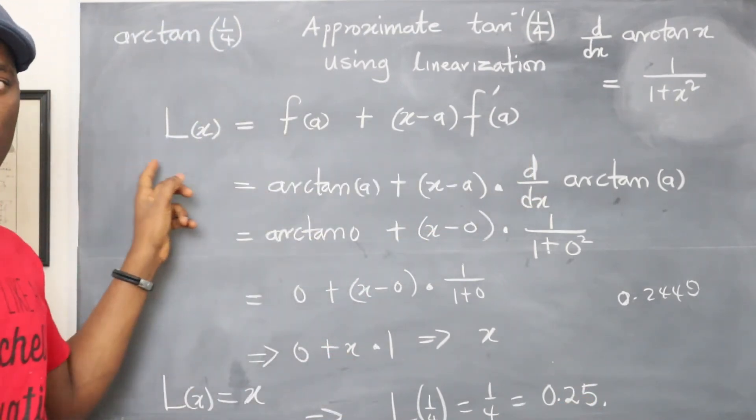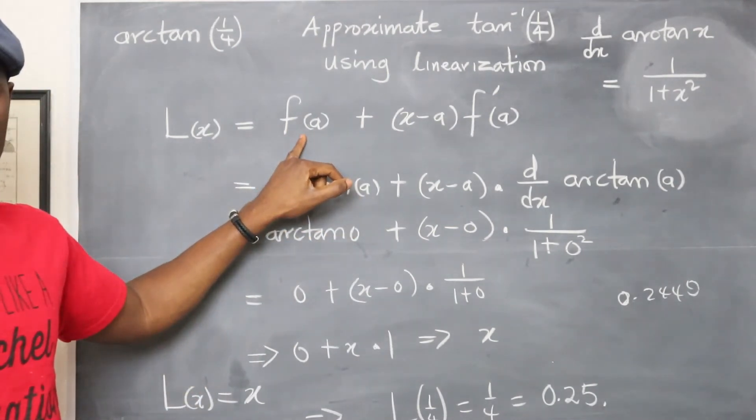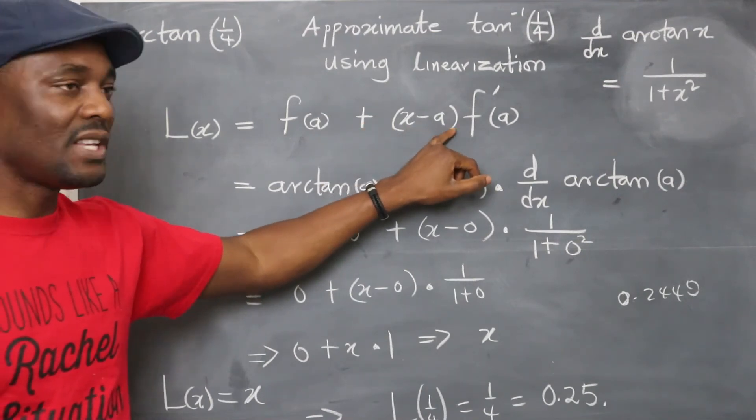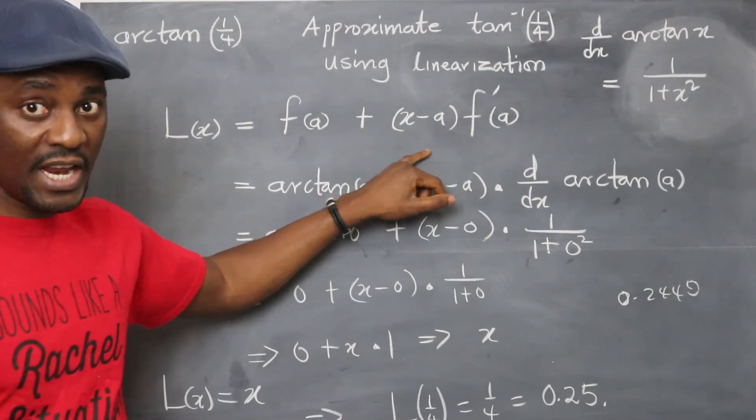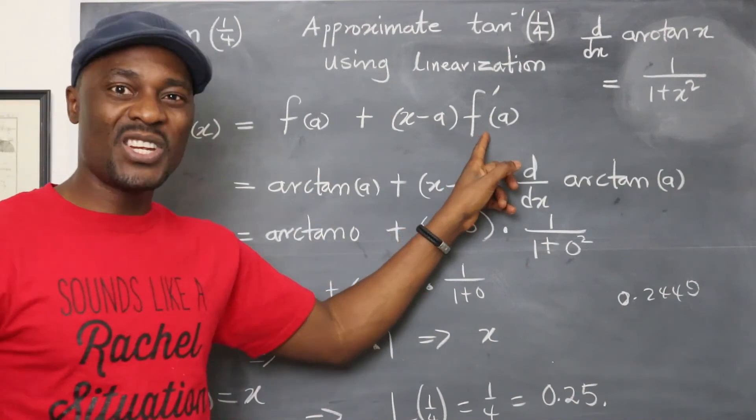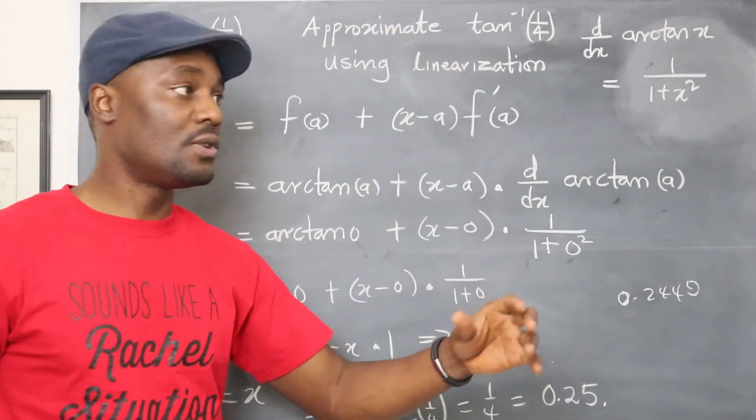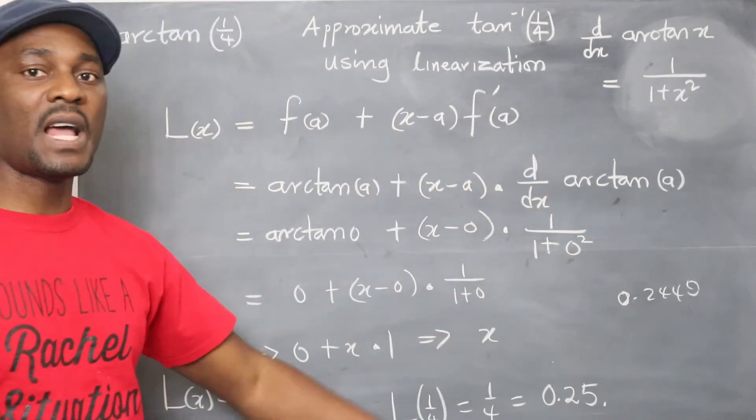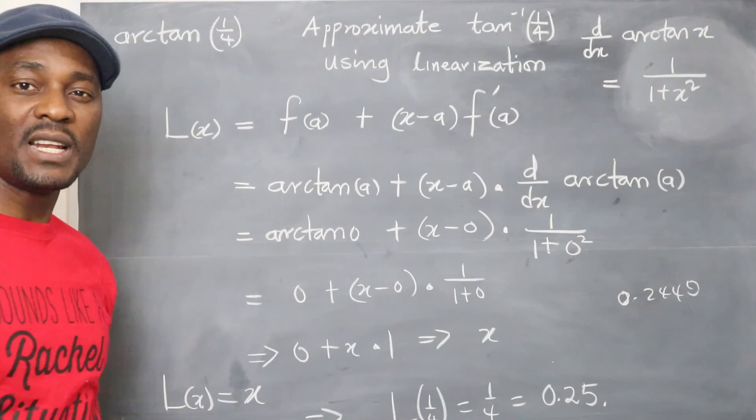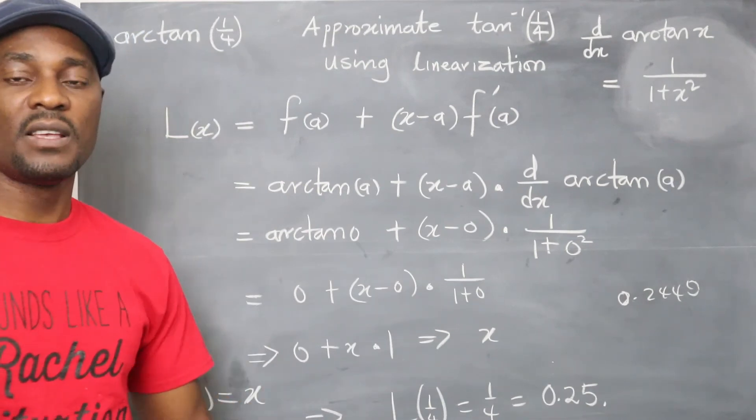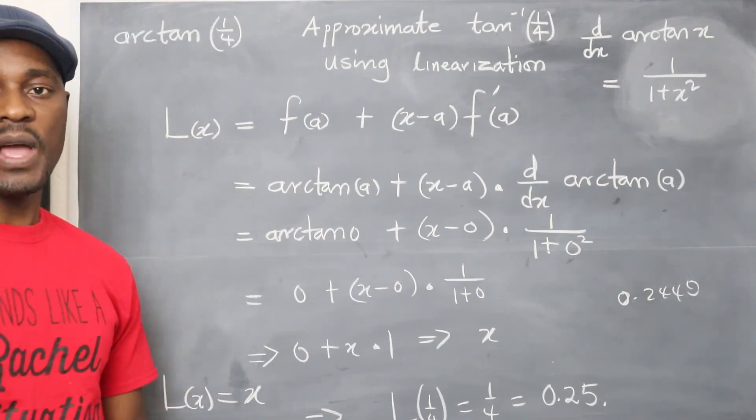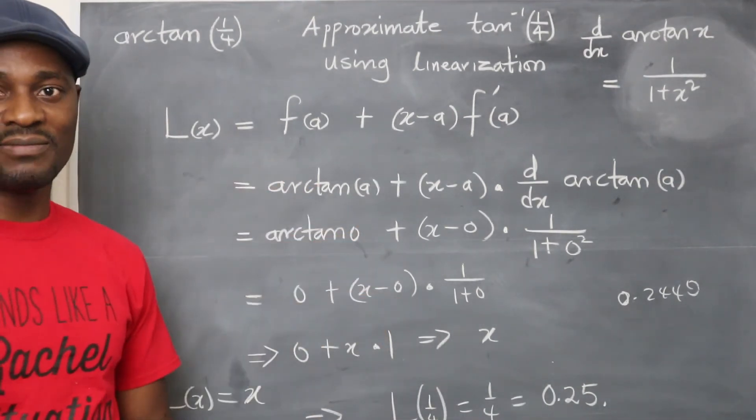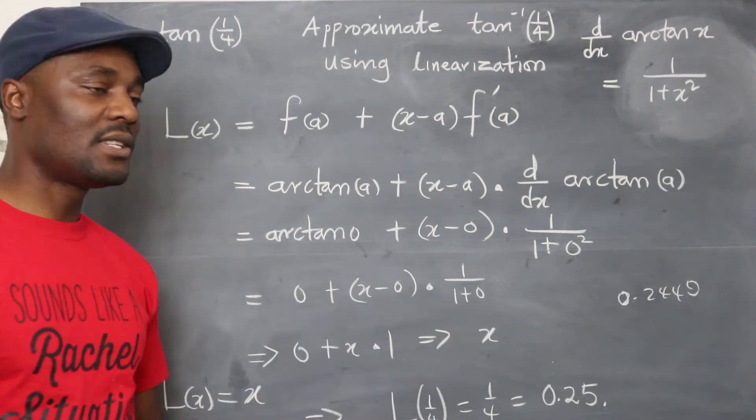This is what you need. Every time you need to do linear approximation, it is the function evaluated at the number you choose, added to (x minus a), which is always the same thing. You don't change this, and then you differentiate the function you're dealing with. If it's a square or a square root, you differentiate that square root, then you take the function and substitute your a for the value of it, and you'll be able to get a linear expression, or at least a linearized version of what you have. It's always linear. That's why we call it linearization.